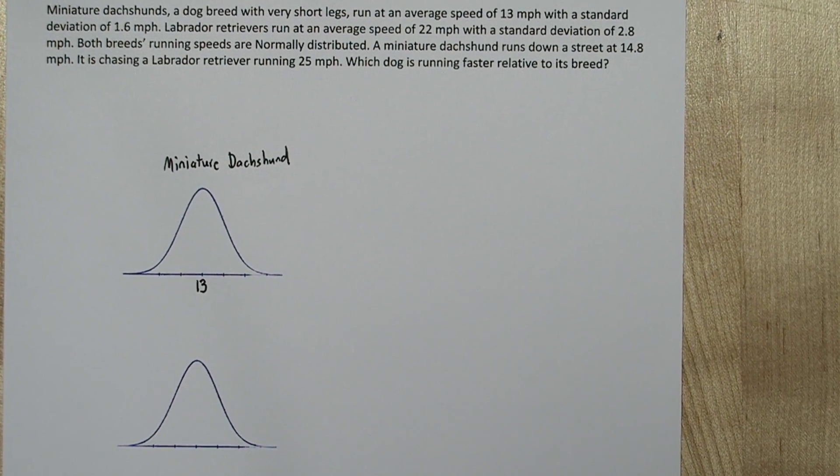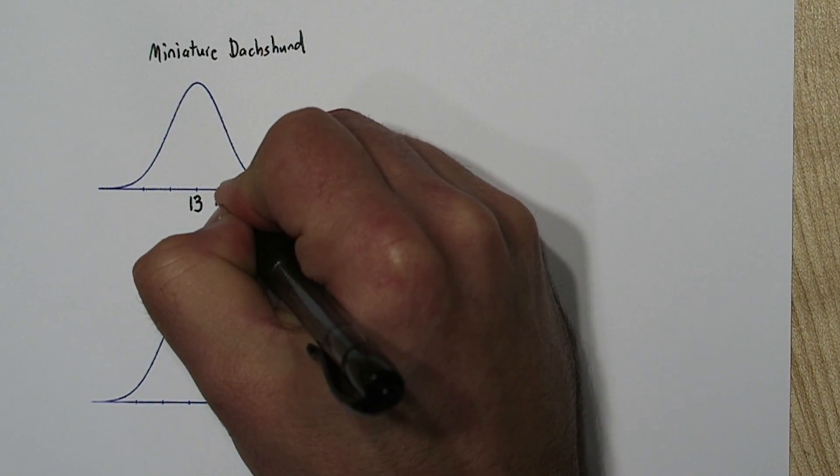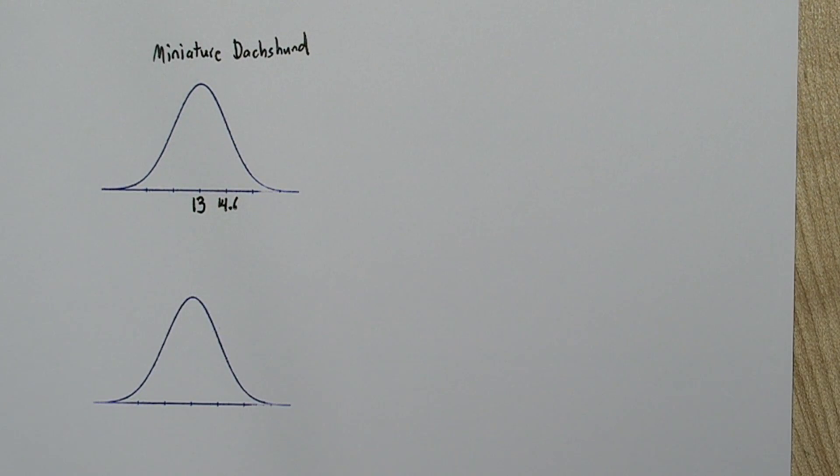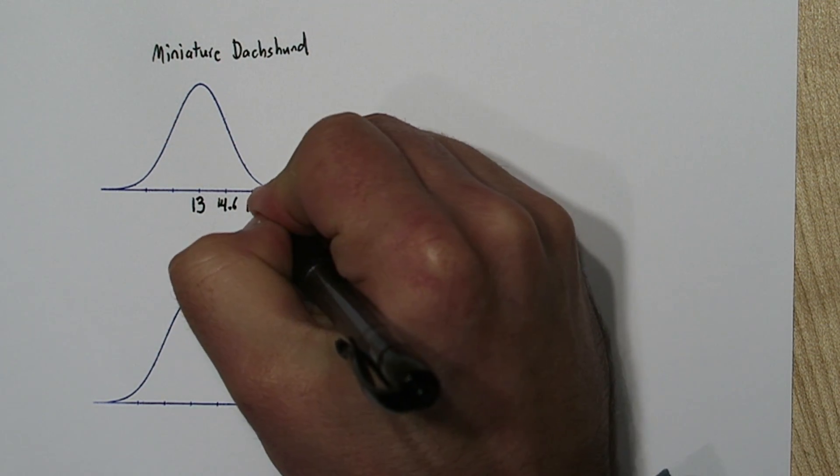So this breed's mean was 13, and since the standard deviation is 1.6, right here must be 14.6, and one more standard deviation would get us to 16.2.